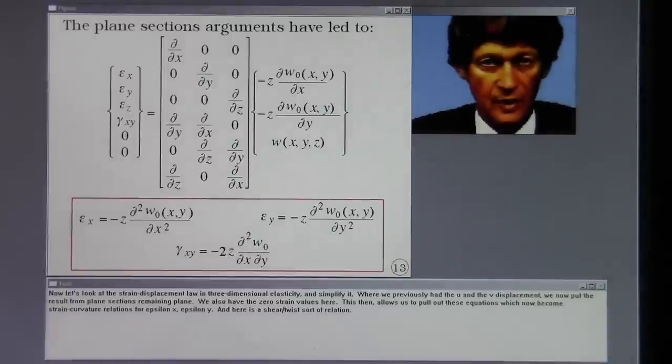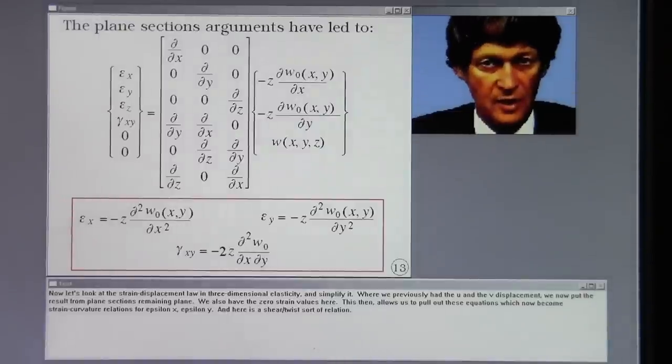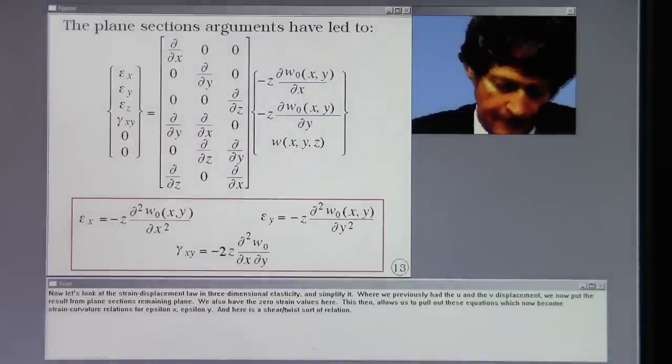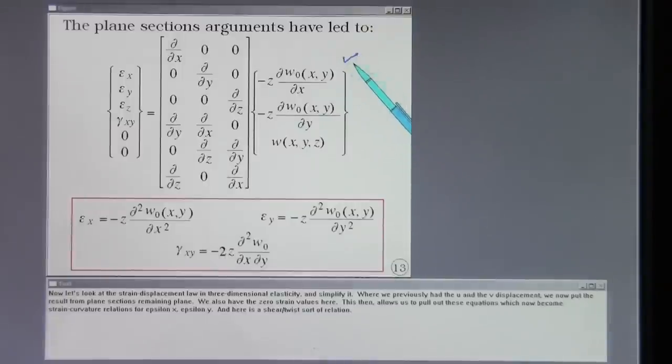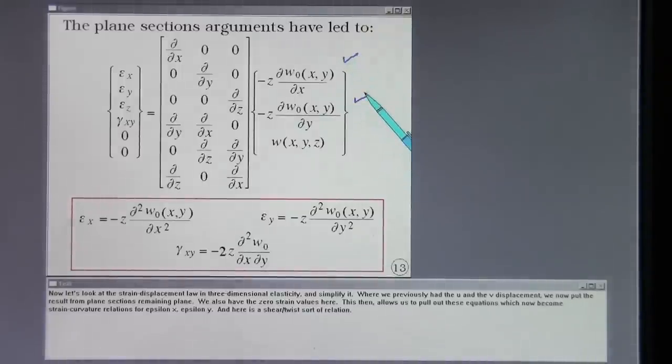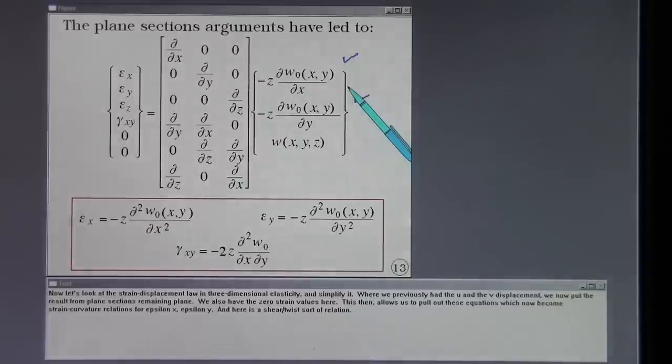Now let's look at the strain displacement law in three dimensional elasticity and simplify it. Where we previously had the U and the V displacement we now put the result from plane sections remaining plain. We also have the zero strain values here. This then allows us to pull out these equations which now become strain curvature relations for Epsilon X, Epsilon Y. And here is a shear twist sort of relation.